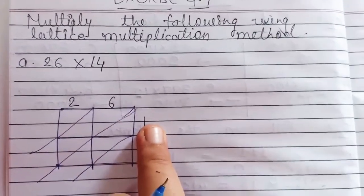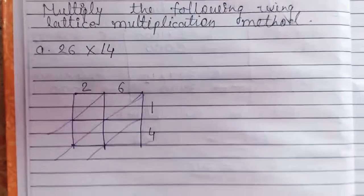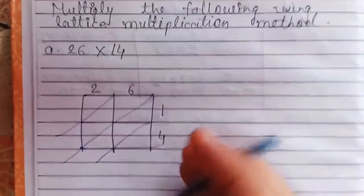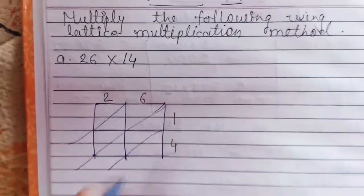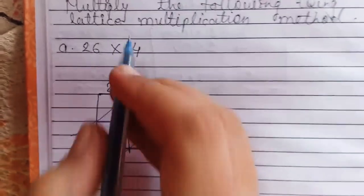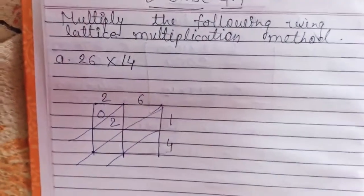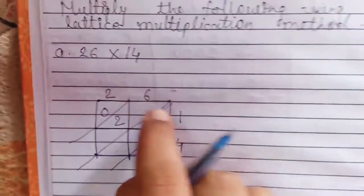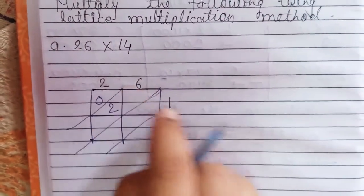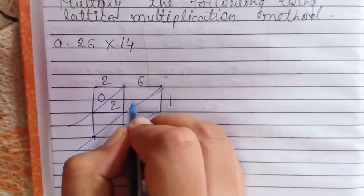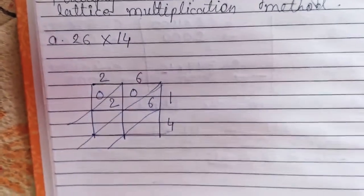First, we multiply 1 with 2 and 6. 1 multiply by 2: 1 two's are 2. There is no tens place value, so write down 0, 2. Then 6 multiply by 1: 6 one's are 6. So there is only 1 digit, so write 0, 6.